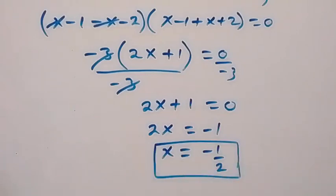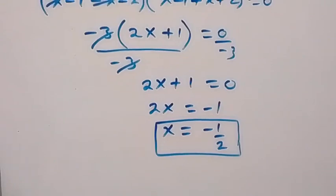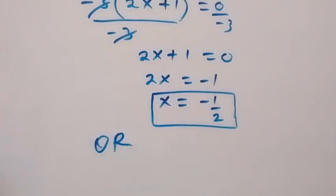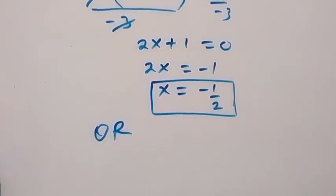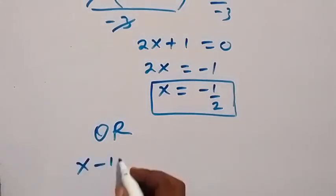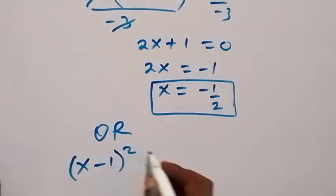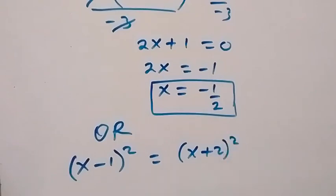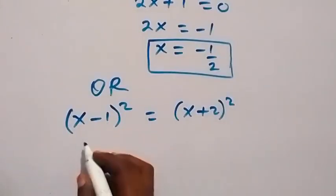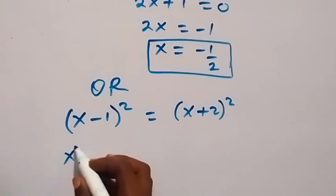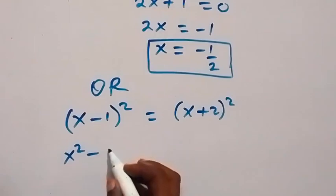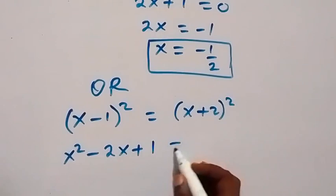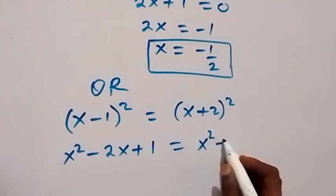We can also do it another way. We can use another method from here, which is (x-1)² equals (x+2)². The expansion here will be x² minus 2x plus 1. That's the expansion here. Equals - also here we have x² plus 4x plus 4.